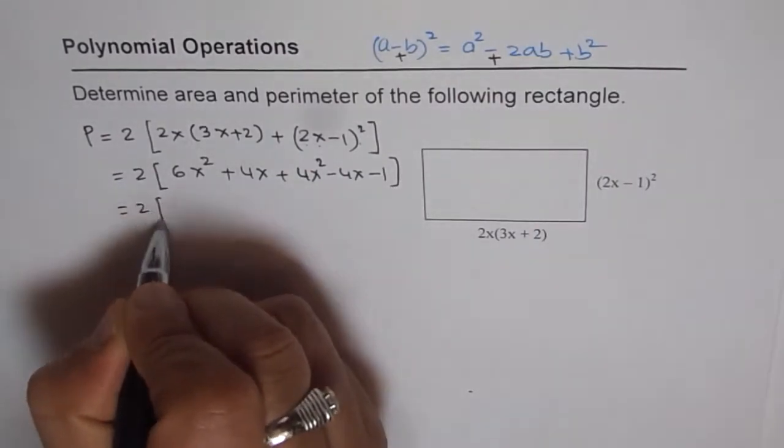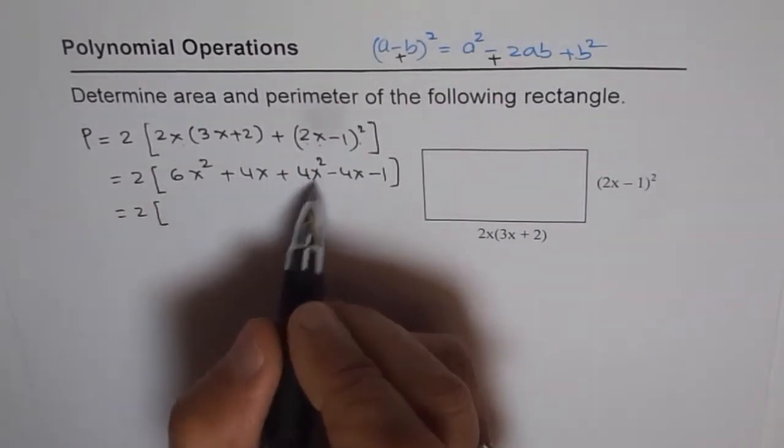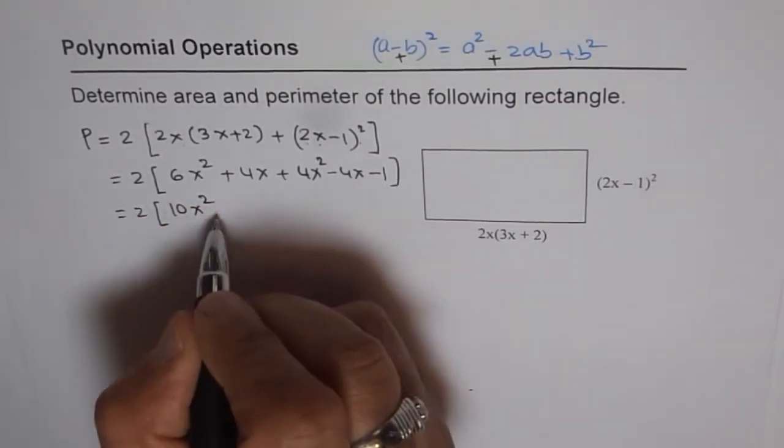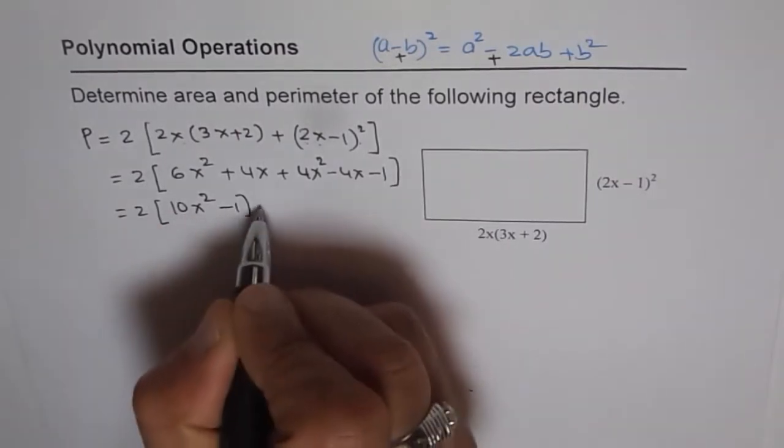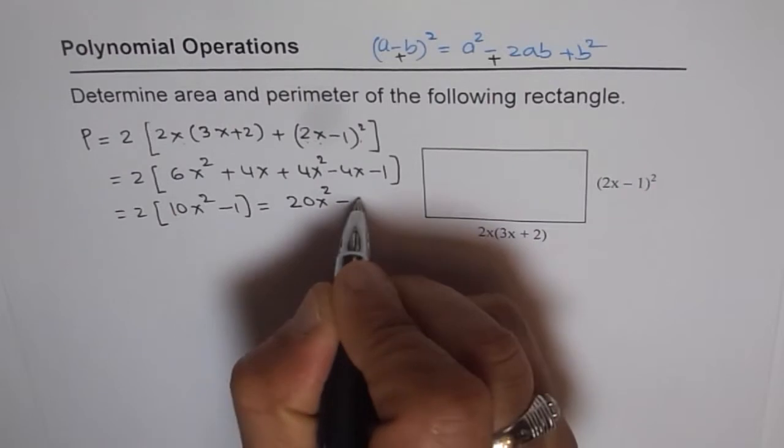Now we can simplify these terms, combine the like terms. 6x squared plus 4x squared is 10x squared. 4x minus 4x is 0 minus 1. When you open the bracket, you get 20x squared minus 1.